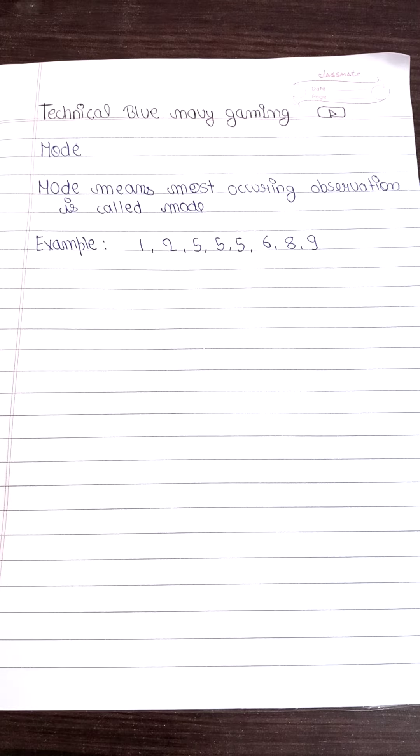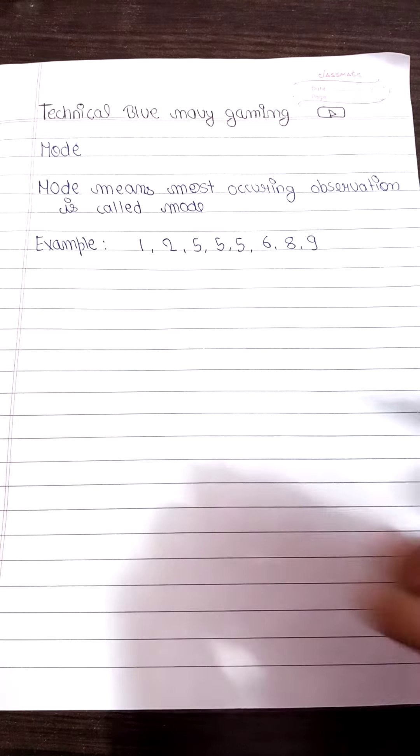This example we have taken the digits 1, 2, 5, 5, 5, 6, 8, 9. So we continue to know what is mode in this digit. Our mode is 5 because 5 is appearing most times. Mode definition means most occurring digit, okay. So our mode is 5, so our answer is 5.